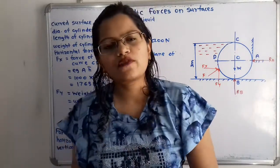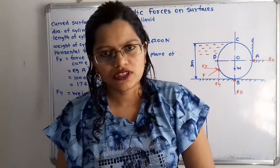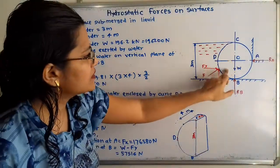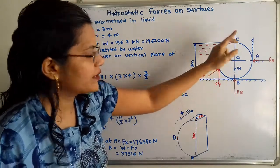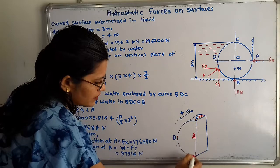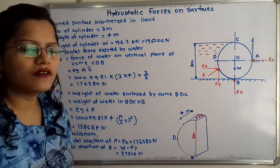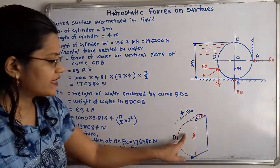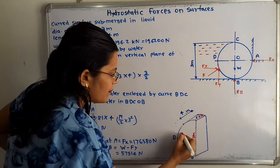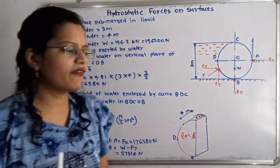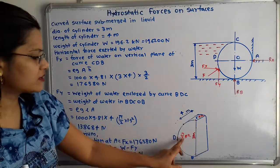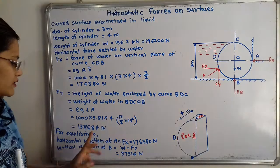The formula for the weight of water is ρ·g·Volume. The volume is calculated as the cross-sectional area multiplied by the length. The cross-sectional area is that of a half cylinder, which is a half-circular portion with formula (π/2)·r². Substituting values: ρ = 1000, g = 9.81, length = 4, and area = (π/2)×1.5² gives FY = 138,684 Newton.